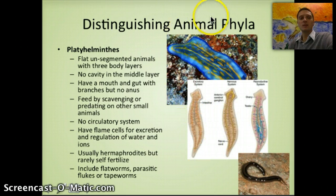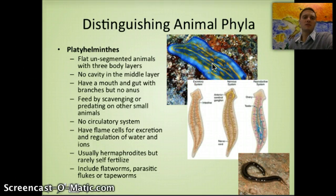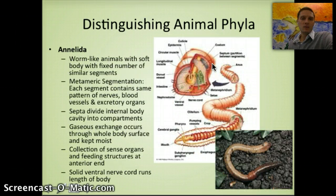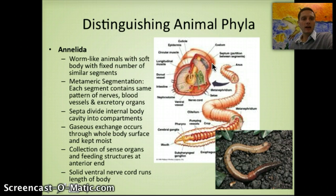Flatworms found in ocean and marine environments often have really striking colors. The next animal phylum is Annelida — essentially segmented worms, with earthworms being a great example. They have distinguished separate body cavities containing nerves and blood vessels, and a collection of sense organs and feeding structures at the anterior end.